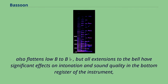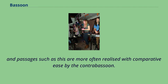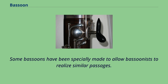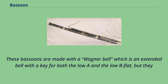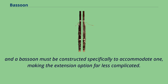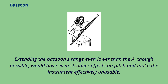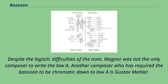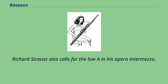All extensions to the bell have significant effects on intonation and sound quality in the bottom register, and such passages are more often realized with comparative ease by the contrabassoon. Some bassoons have been specially made with a Wagner bell — an extended bell with a key for both the low A and the low B-flat — but they are not widespread and suffer similar intonational problems. Wagner was not the only composer to write the low A; Gustav Mahler and Richard Strauss also call for it in his opera Intermezzo. Some works have optional low As, as in Carl Nielsen's Wind Quintet, Op. 43, which includes an optional low A for the final cadence of the work.